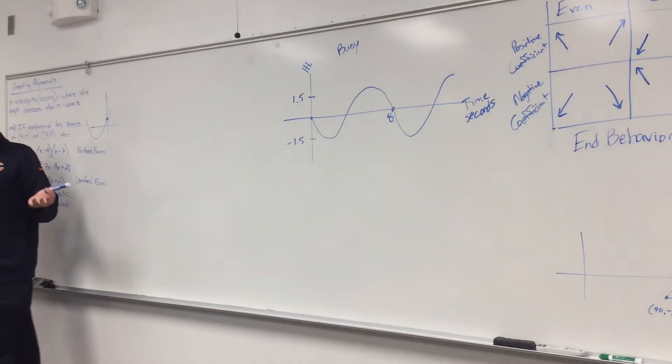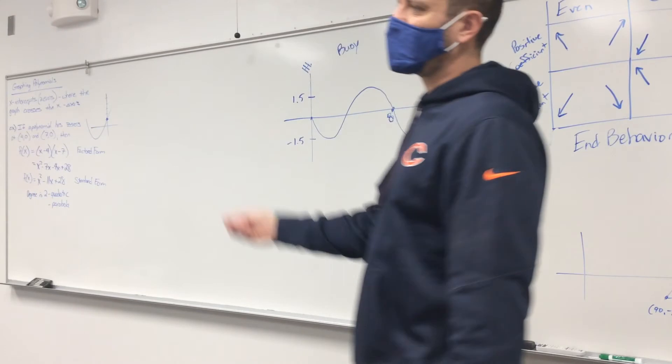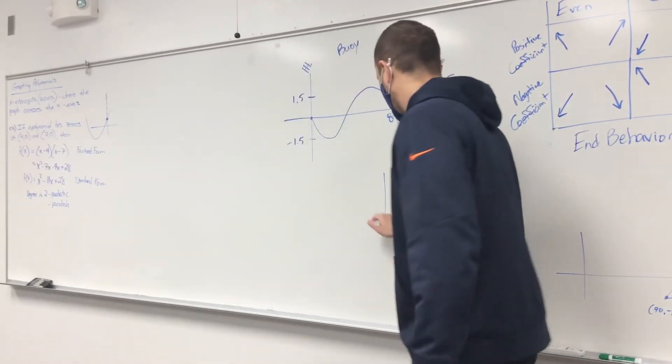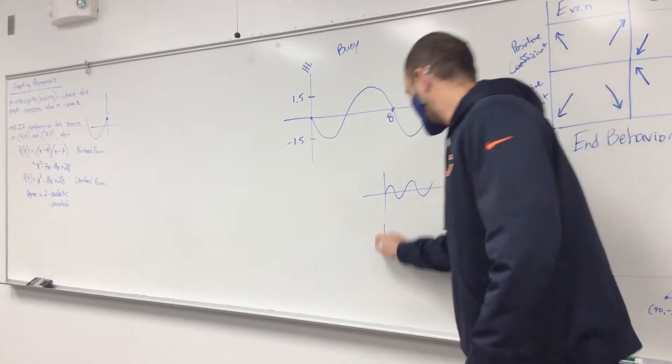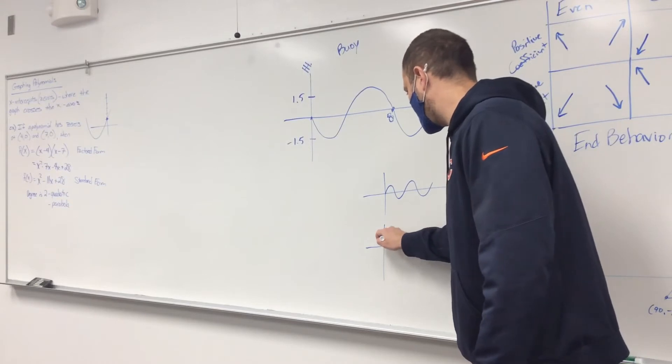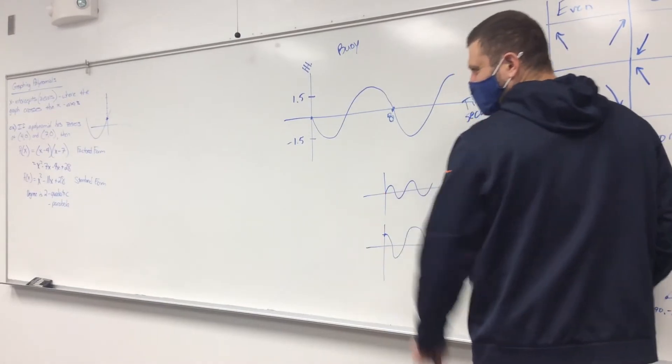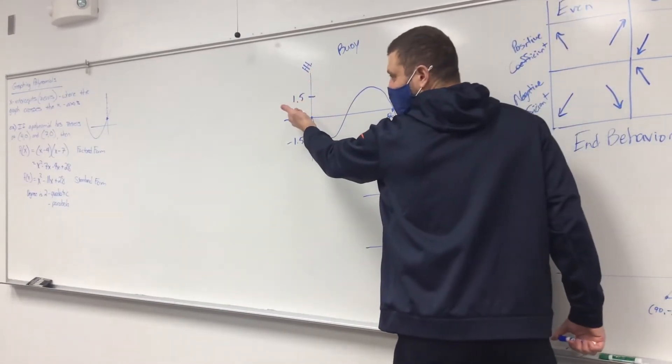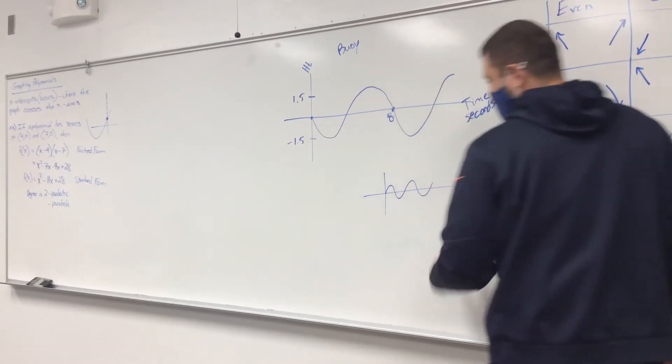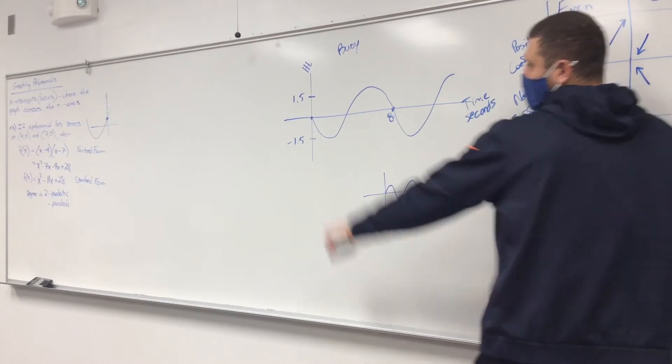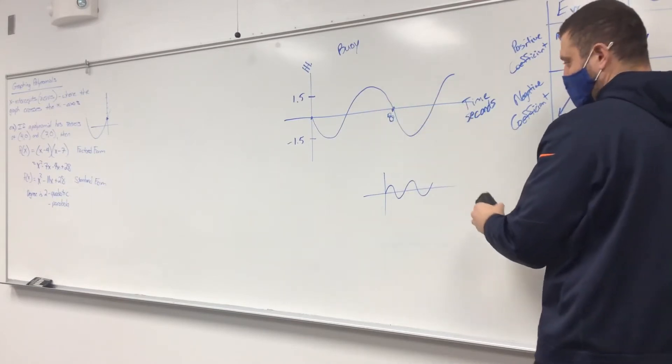So to write our equation, you first might want to think, am I going to write a sine equation or a cosine equation? Sine. To decide which one, think about where the sine function starts versus where does the cosine function start. Your sine curve starts at the origin and does this. Your cosine curve starts up at one and heads down. Sine starts in the middle, cosine starts at the top. This starts in the middle, so I'd use sine. Now, sine starts in the middle and heads up. This one is starting in the middle and heading down. So it's going to have a negative coefficient, negative A value.